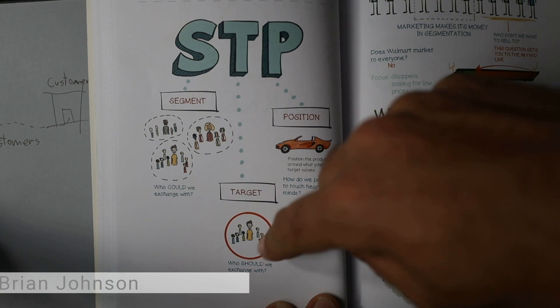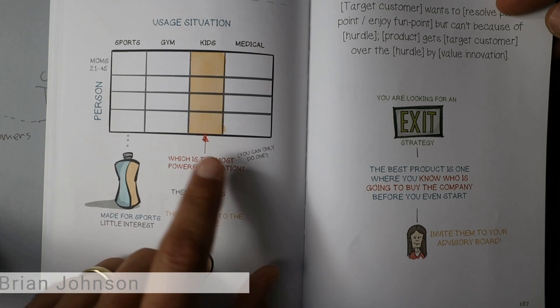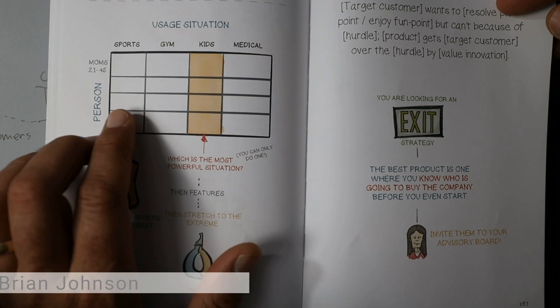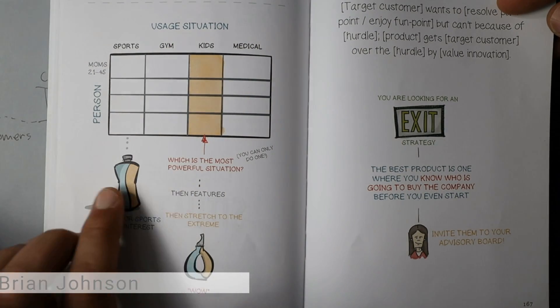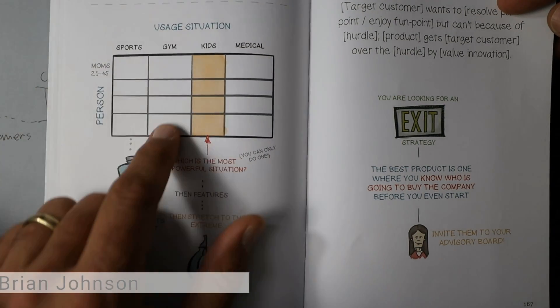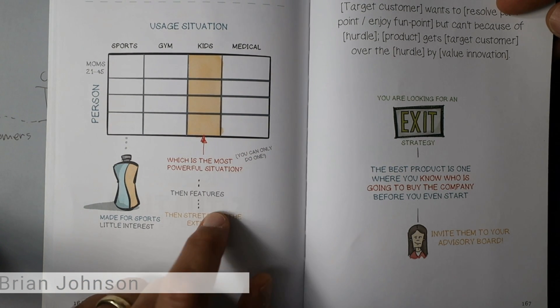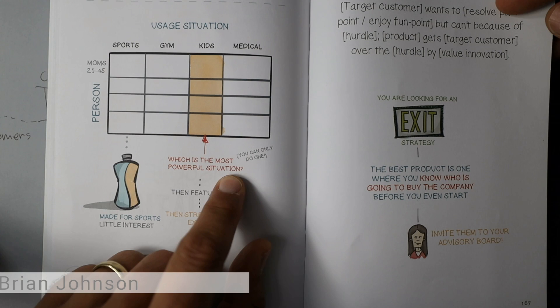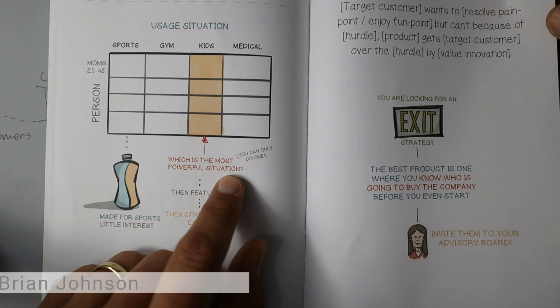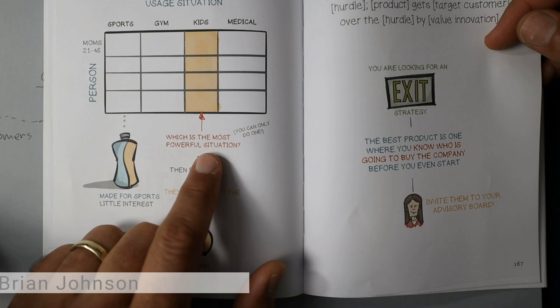The next thing I need to do is target who I should be working with. There are all these different people that I could serve, different situations I could serve. This is talking about some kind of sports drink. It's like, well, you could serve people in sports or at the gym or in medical situations. You can only really do one. And how do you pick which one? Pick the one that's the most powerful situation. But I think the power has to do with how much money they're willing to spend.